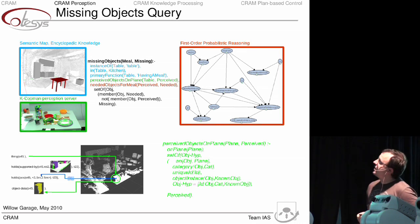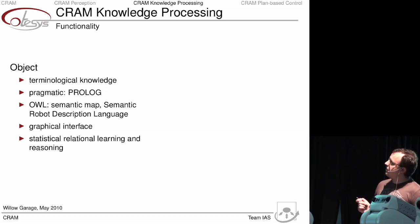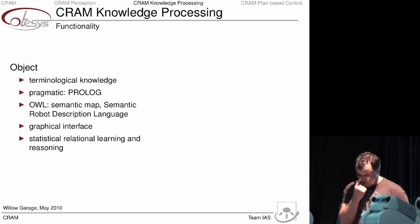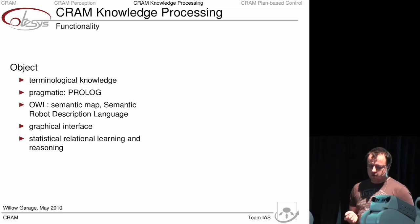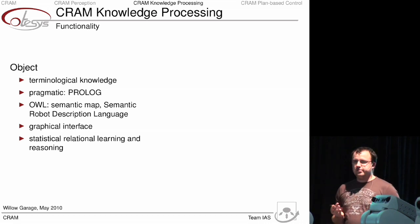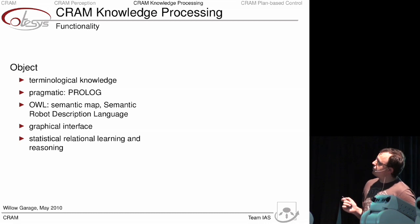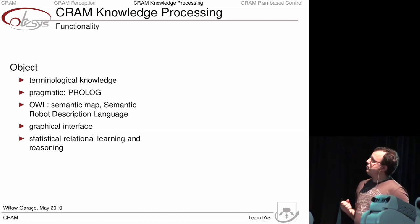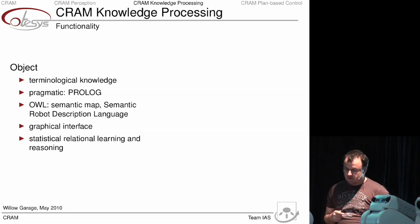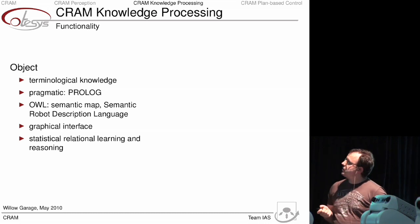This was the perception component. The second component is knowledge processing — our no-rob system, which I have already mentioned throughout the first part. It basically provides the terminological knowledge. It's very pragmatic since we're using Prolog as the main language, which enables fast and lightweight queries. All objects in these systems are modeled as OWL, and we have also developed our own language called Semantic Robot Description Language, which enables us to model robots' capabilities. It has a nice graphical interface, is available as a ROS package, and deploys machine learning techniques such as statistical relational learning and reasoning.